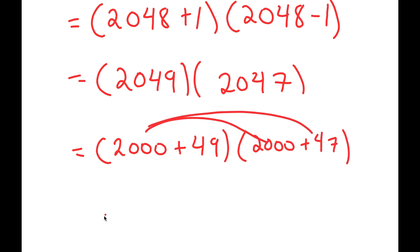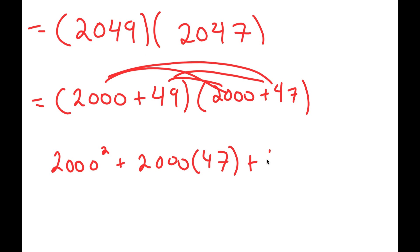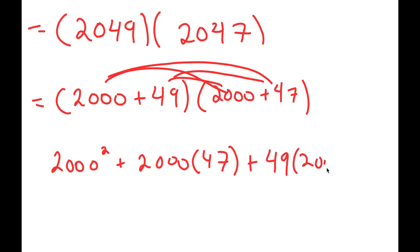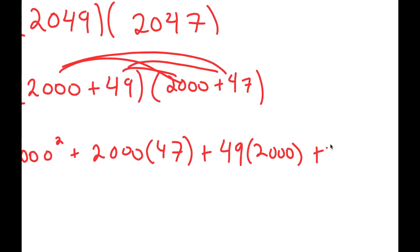So, I have 2000 times 2000, which is 2000 squared, plus 2000 times 47, plus 49 times 2000, plus 49 times 47.